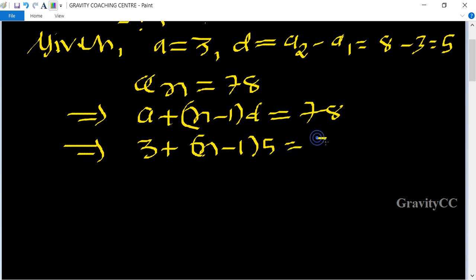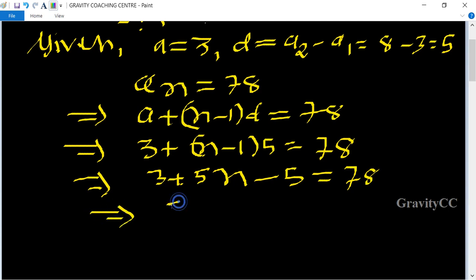This implies that 3 plus 5n minus 5 equal to 78. Implies that 5n minus 2 equal to 78.